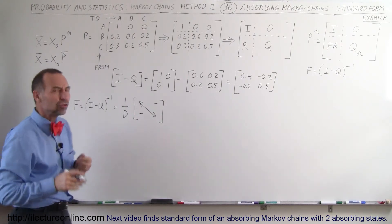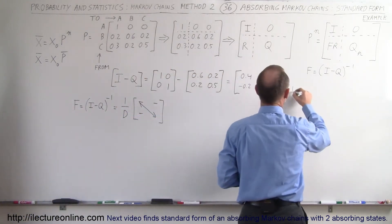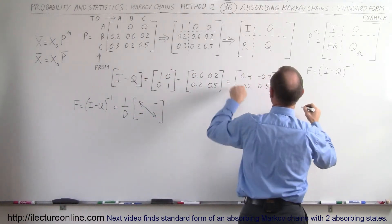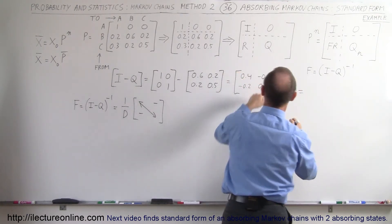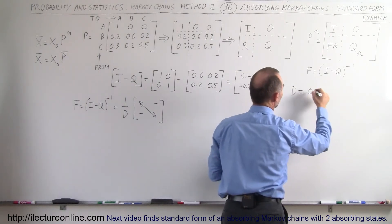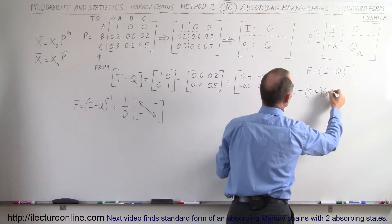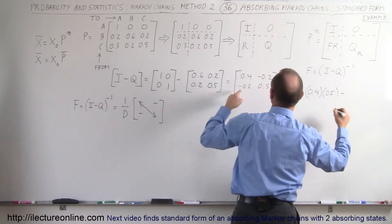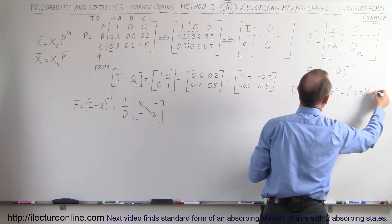All right what is the determinant? Well the determinant of the matrix can be found like this. The determinant of this matrix right here, because that's the matrix I minus Q, is equal to the product of these two elements right here. So it would be 0.4 times 0.5 minus the product of those two elements which is minus 0.2 times minus 0.2.